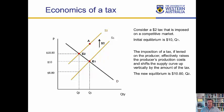Once we appreciate the difference between what consumers pay and what producers actually get to keep in terms of revenue, we're ready to look at the burden of the tax — i.e., who pays the tax. In this example, consumers paid an extra $0.80 for the $2 tax, but compared to the initial price of $10, producers receive $1.20 less. So effectively, consumers are paying $0.80 of the tax and producers are paying $1.20 of the tax.